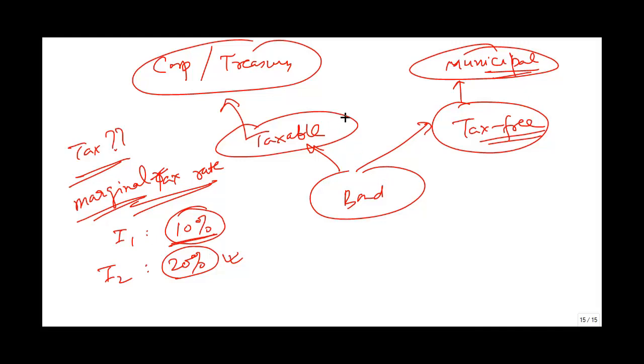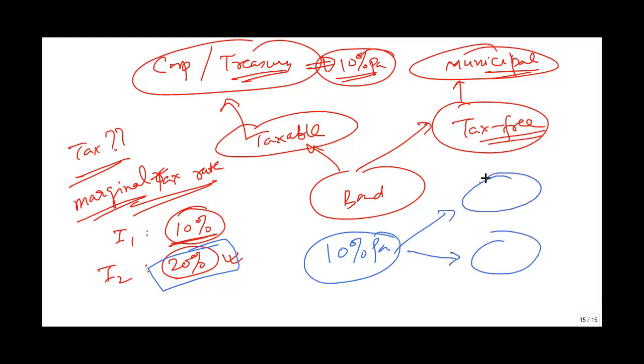What are the implications of taxable bonds? Suppose a bond is giving you 10% per annum return, and you are in the 20% tax bracket. Do you realize the full 10% per annum return, or do you realize lower or higher than this?